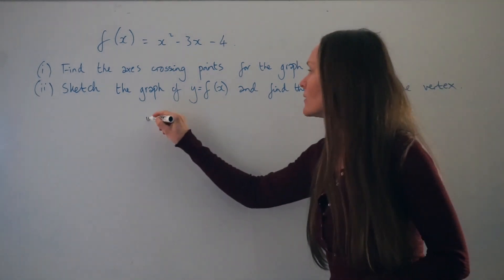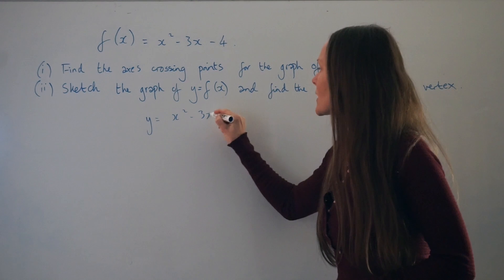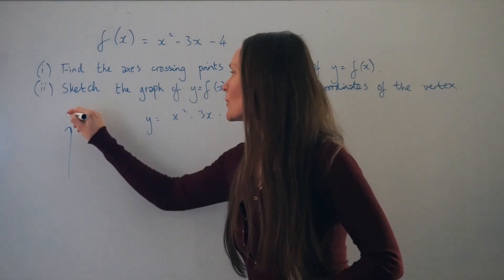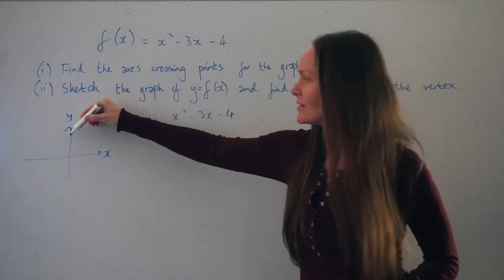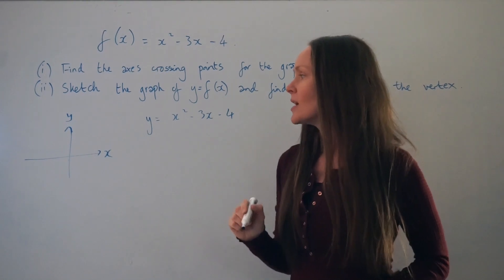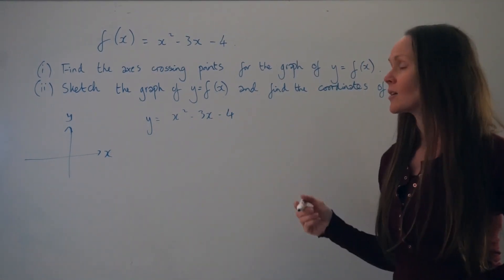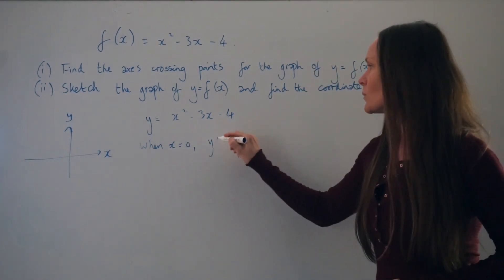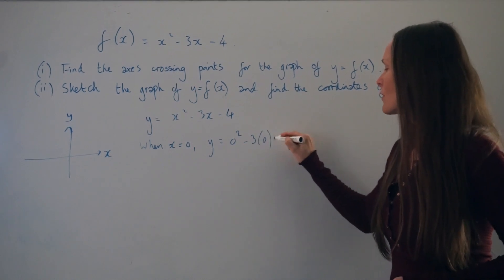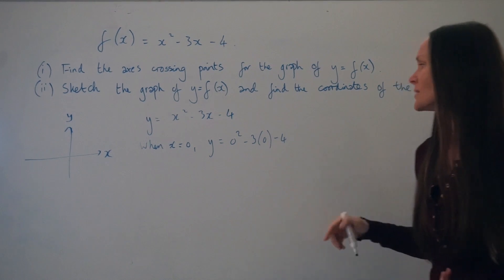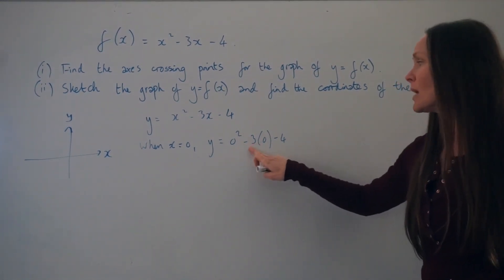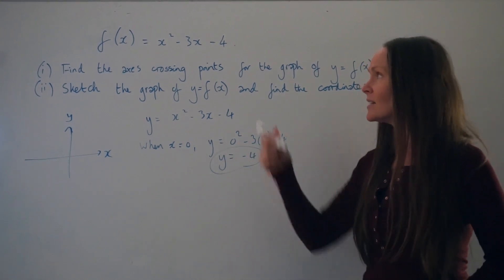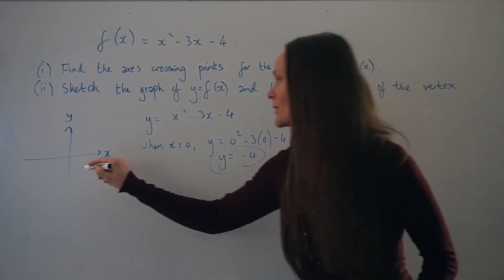I'll write down the equation y = x² - 3x - 4. Starting with where this graph intersects the y-axis — when a graph intersects the y-axis, the x value is always equal to 0. Substituting x = 0: y = 0² - 3(0) - 4 = -4. So the quadratic graph crosses the y-axis at negative 4.